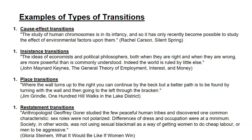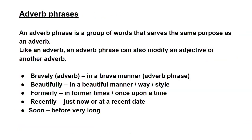A restatement transition example: 'Anthropologist Geoffrey Gorer studied a few peaceful human tribes and discovered one common characteristic — sex roles were not polarized. Differences of dress and occupation were at a minimum. Society, in other words, was not using sexual blackmail.' These transition types are important to know because you need to understand when and why to use them in essay writing.